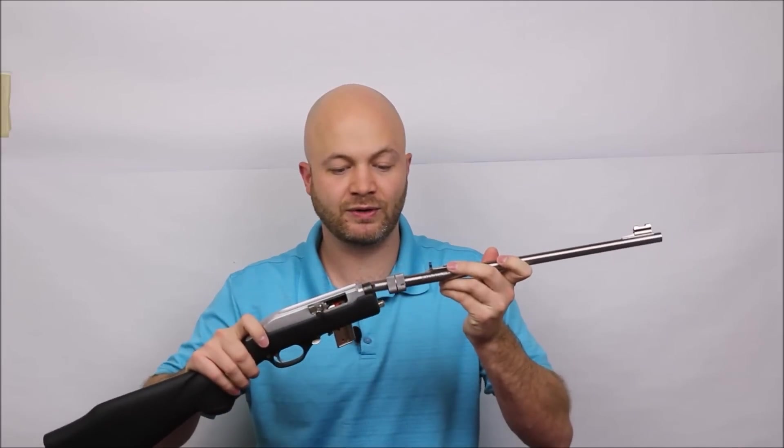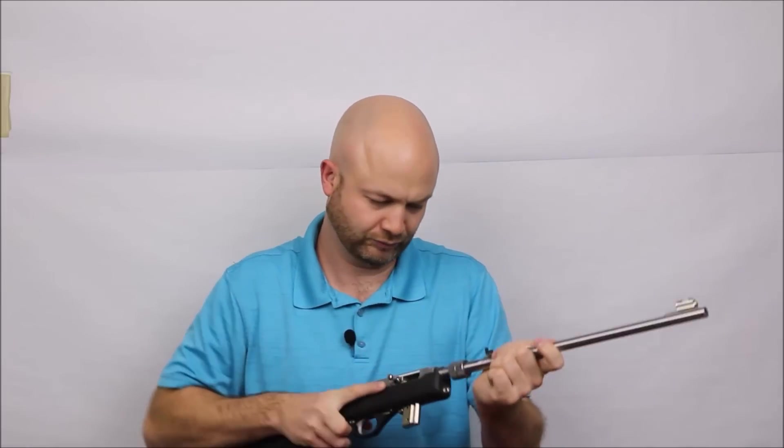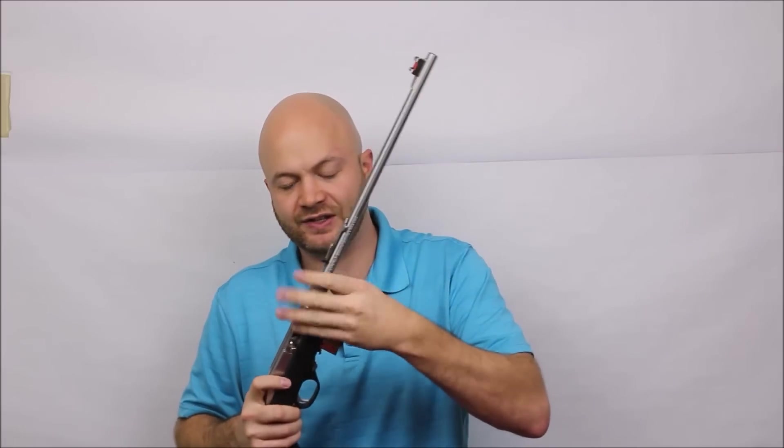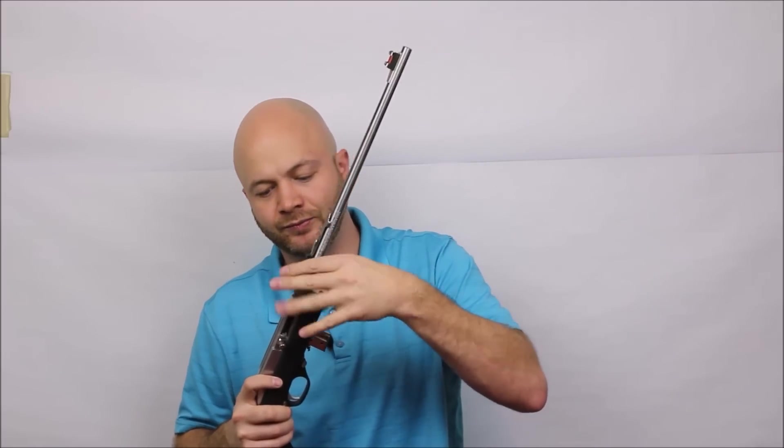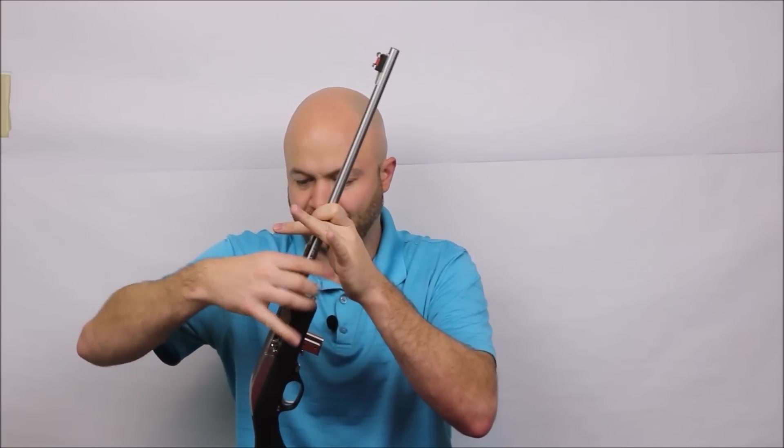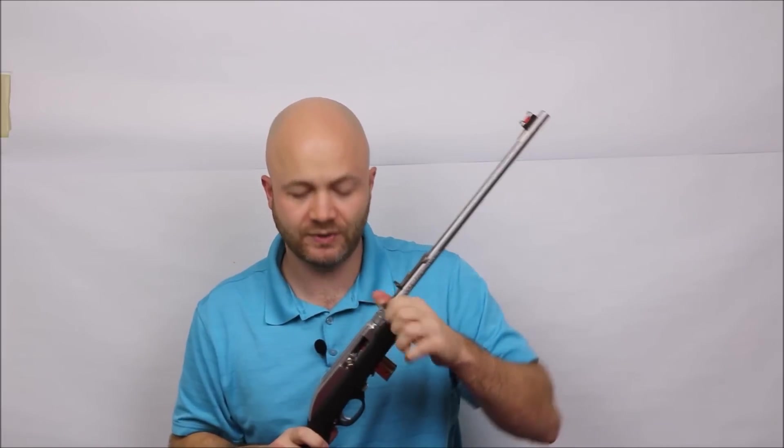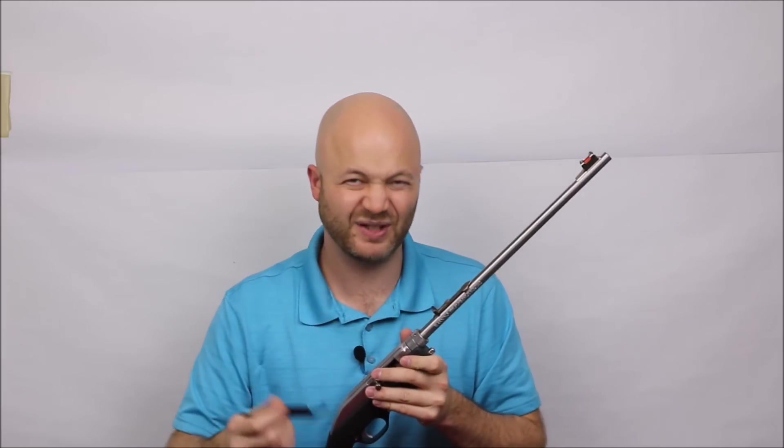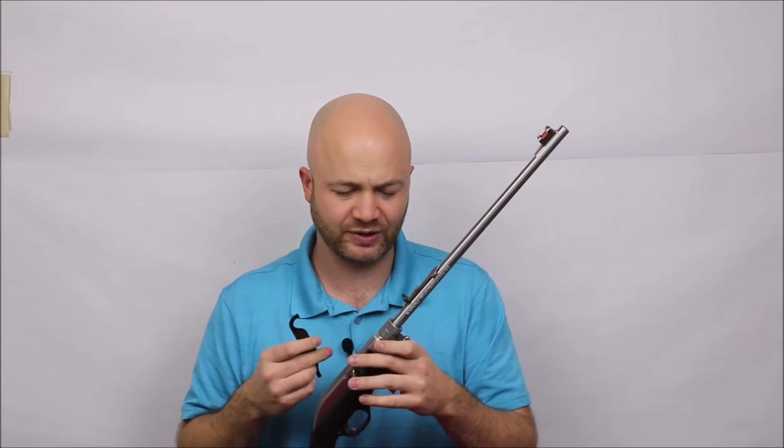To assemble it, we're taking that barrel, popping it in, and tightening this barrel nut. This takes a little bit longer than the 10/22 takedown model, but it's also considerably cheaper than the 10/22 model as well.